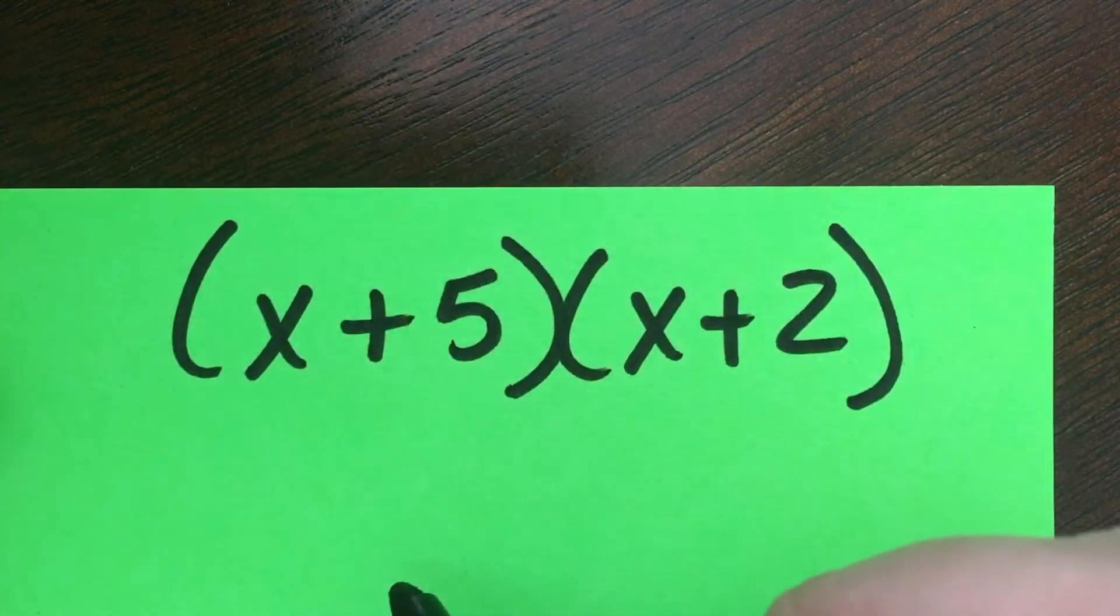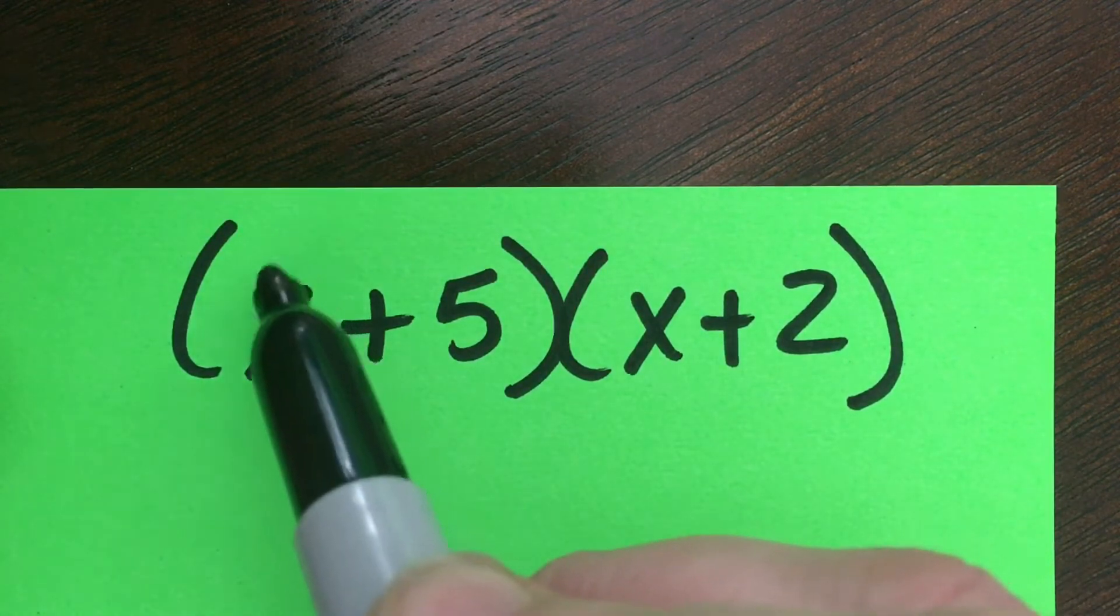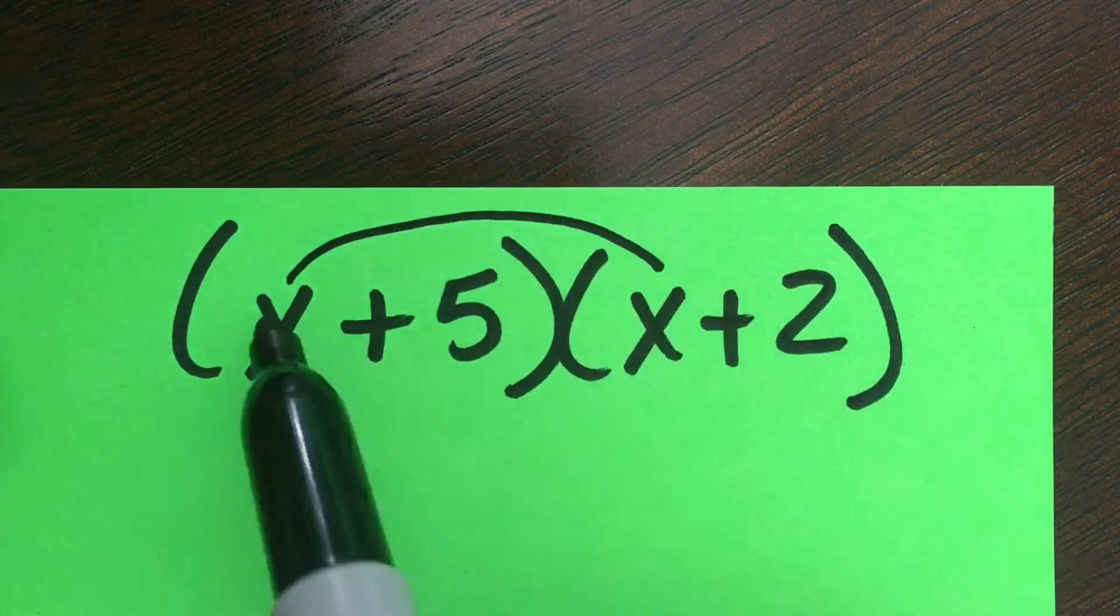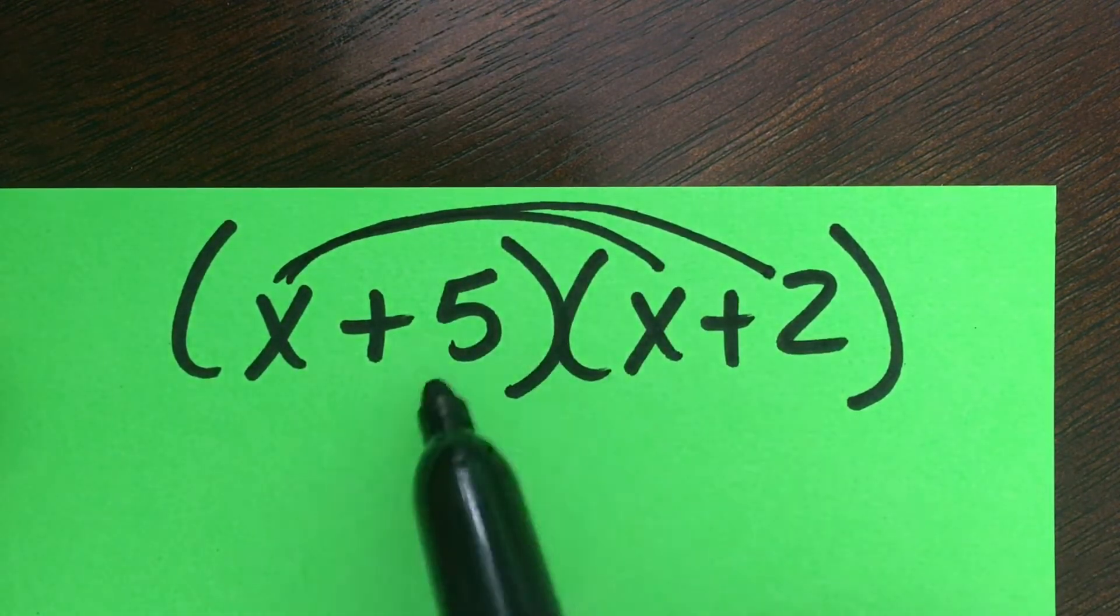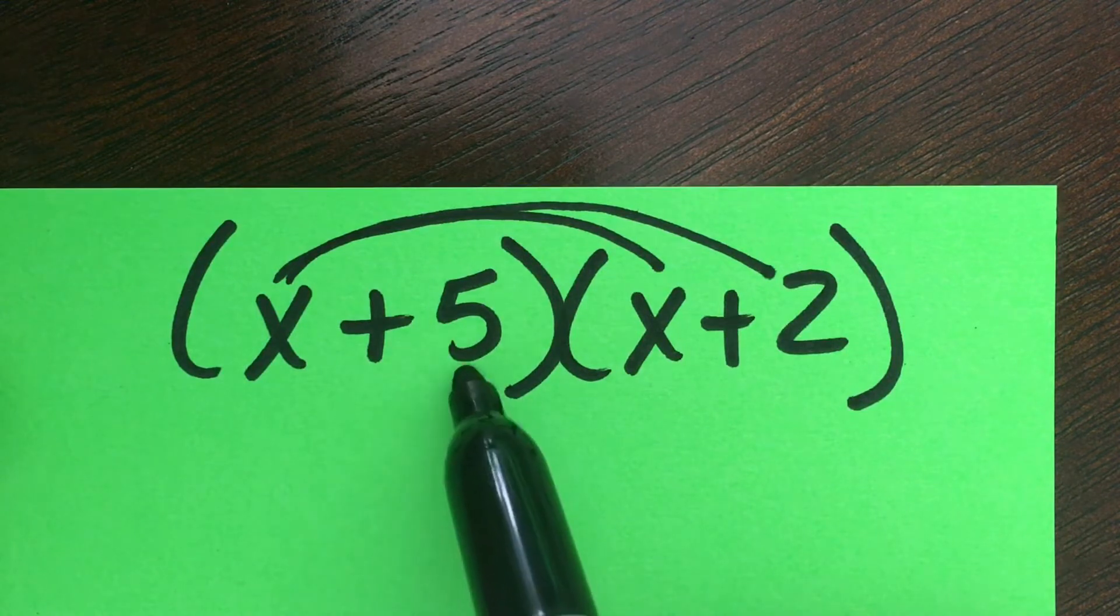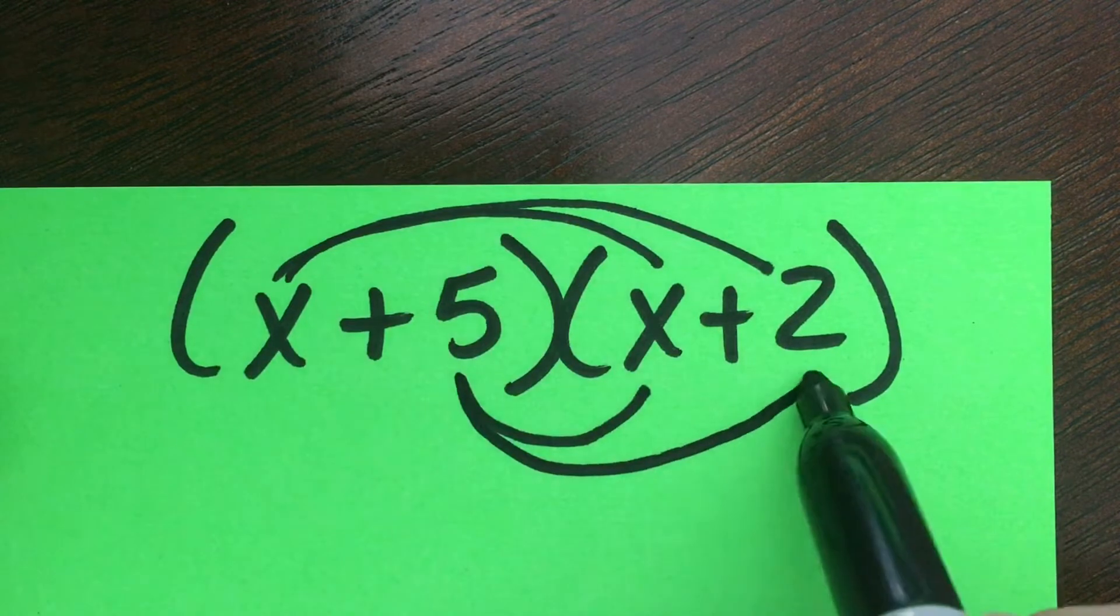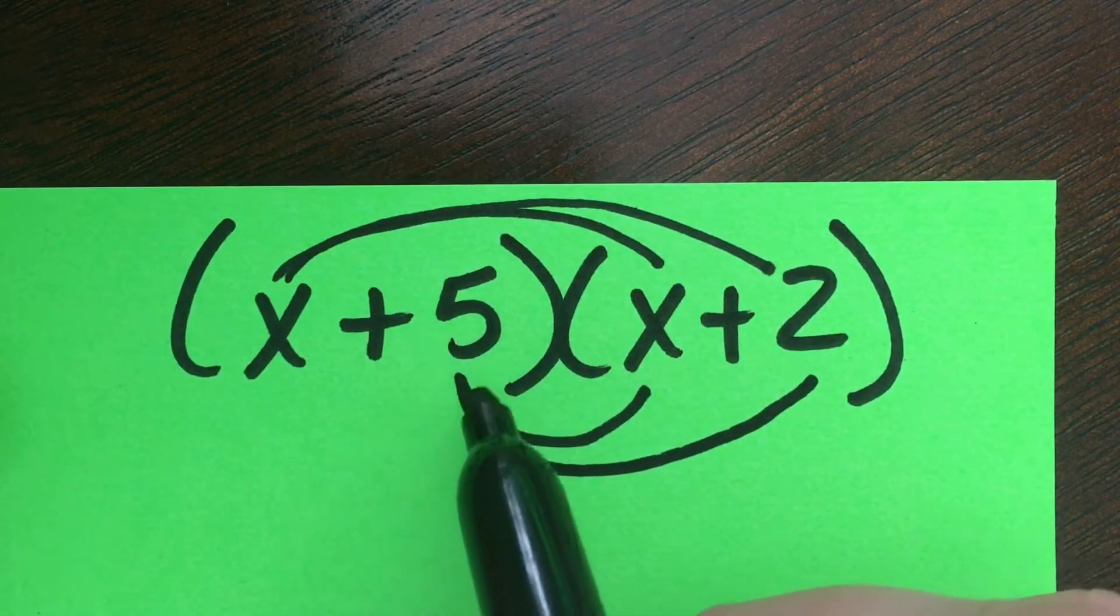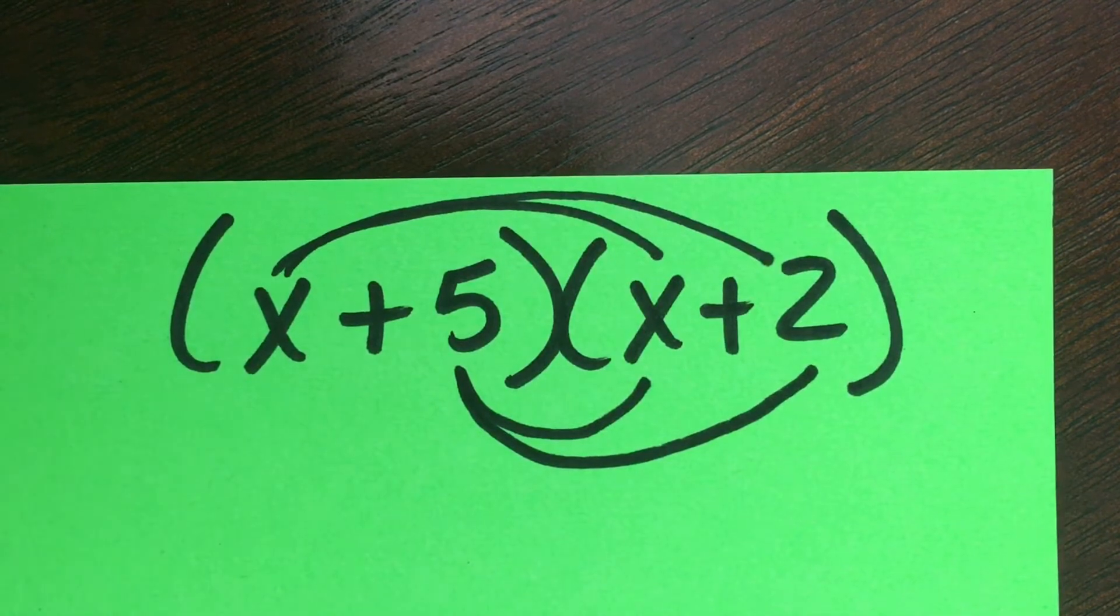Distribution is just a repeated process of multiplication where we're going to multiply first term times first term, first term times second term. And then in this same binomial grouping, we're going to take the last term here and multiply it to the first term in the other one, and then that second term in the first binomial multiplied to the last term. So this is the general process.